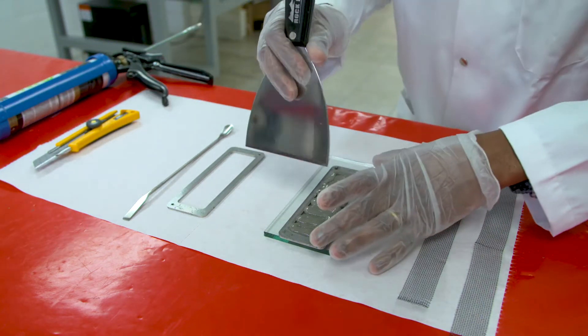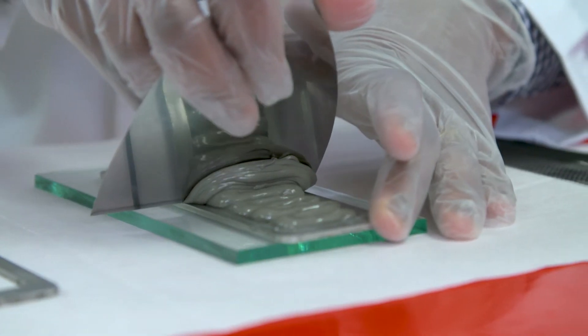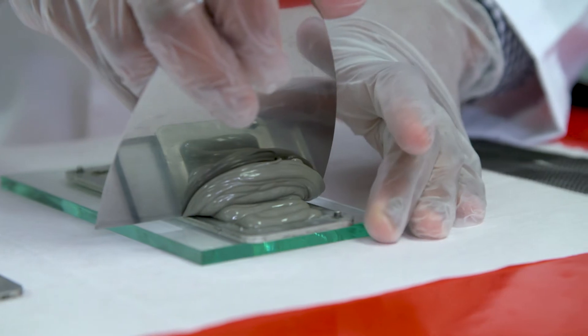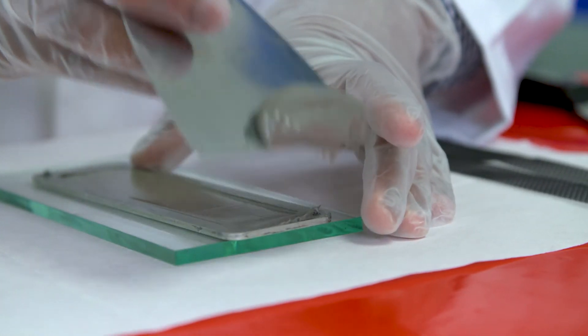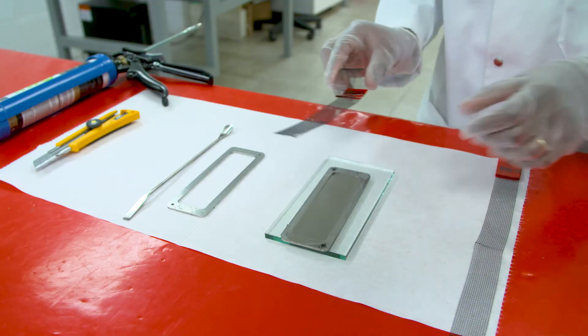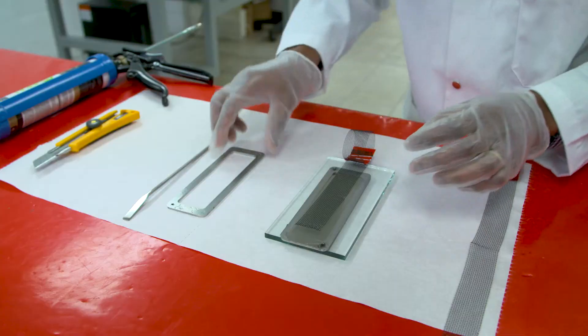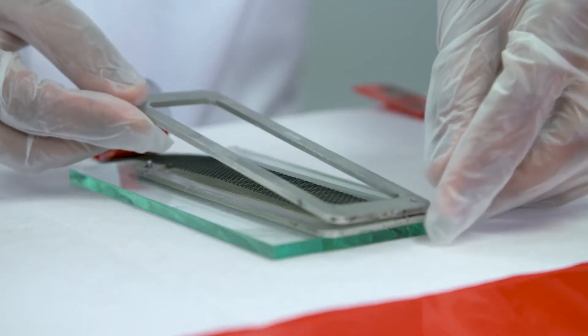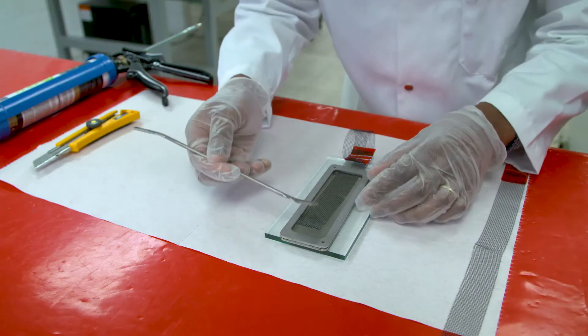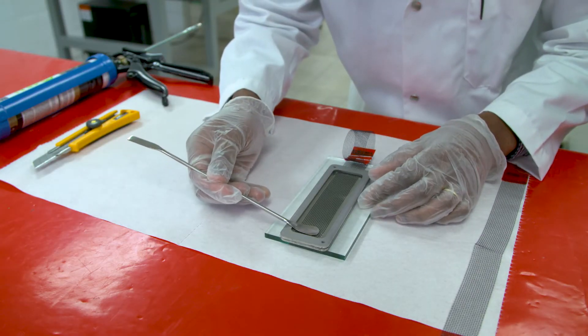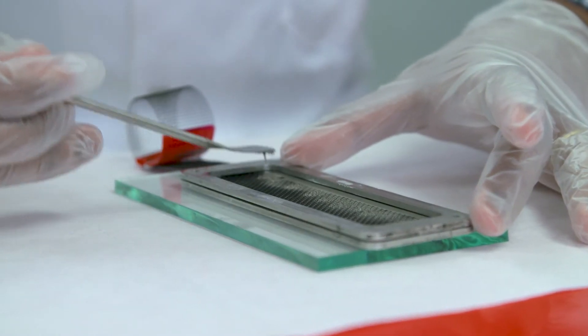Using the small spatula, the sealant must pass through the aluminum mesh. The mesh will be sandwiched between two layers of sealant.